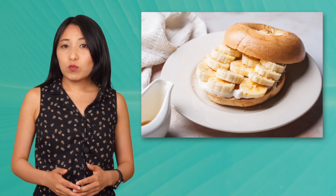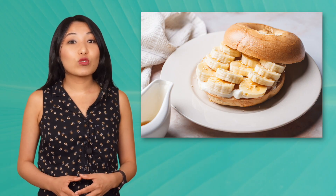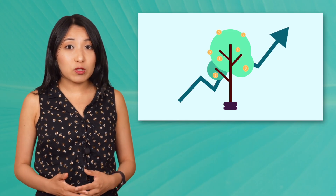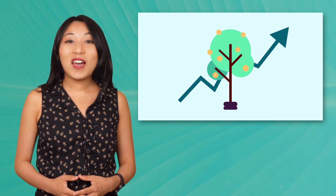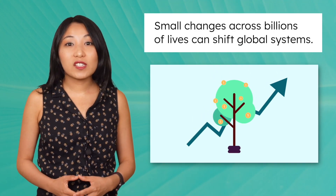For example, I know I can't solve all of the problems, but I can do something. My choice of what to have for breakfast might seem small, but the environmental costs don't show up on my receipt, and they're real. When you multiply that cost by millions or billions of people making similar choices each day, the impact adds up fast. Small changes across billions of lives can shift global systems. Until next time, remember that your choices matter — the more you know about your impact, the more power you have to reduce it, and to educate others.